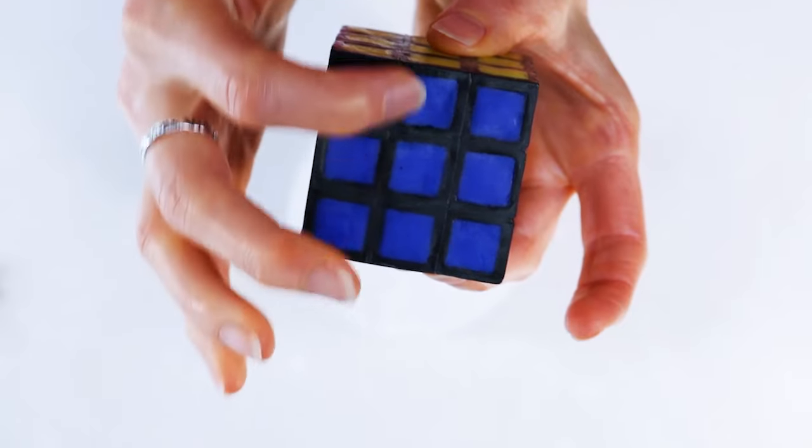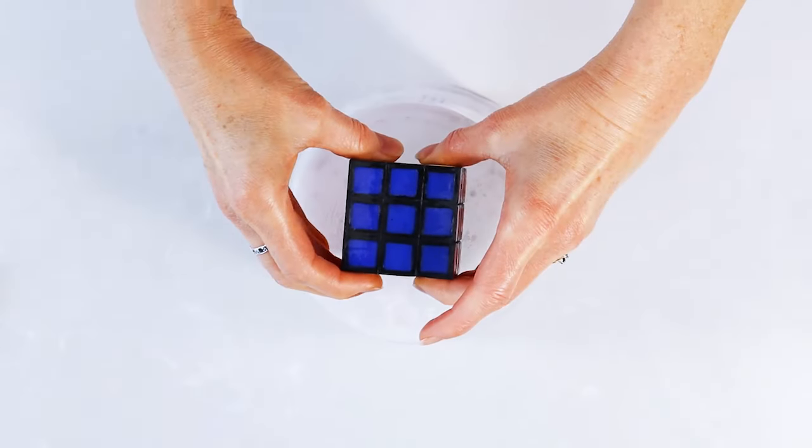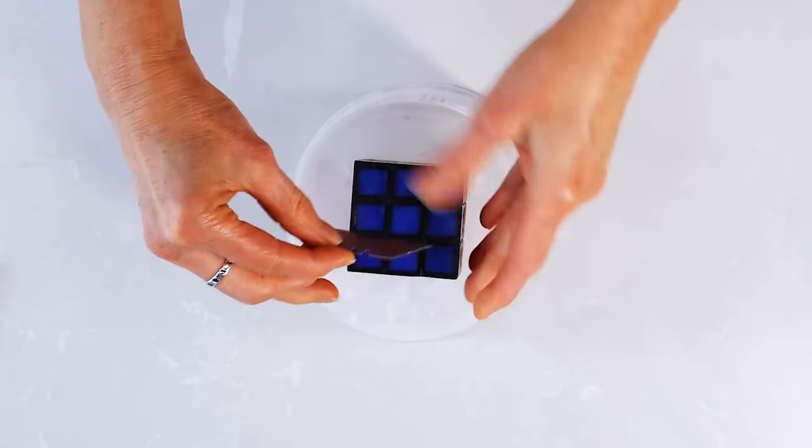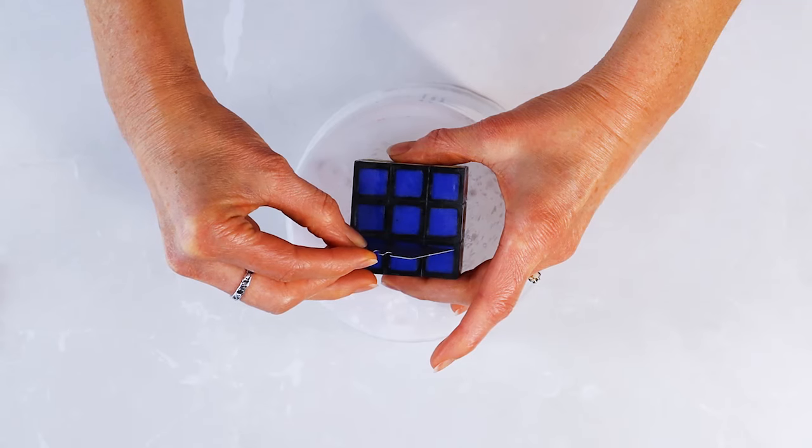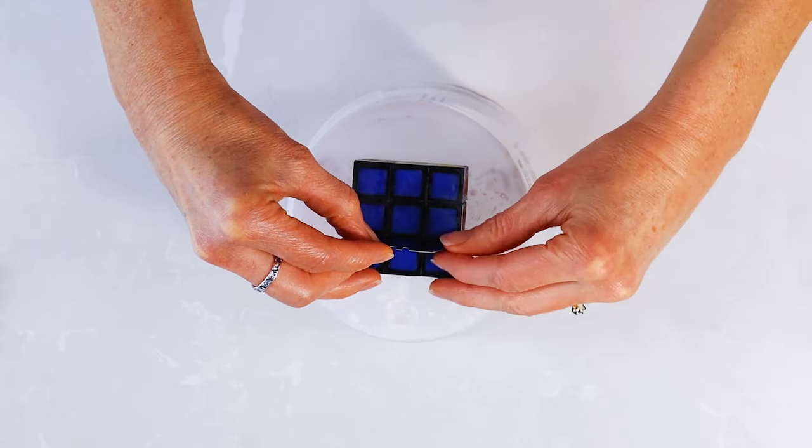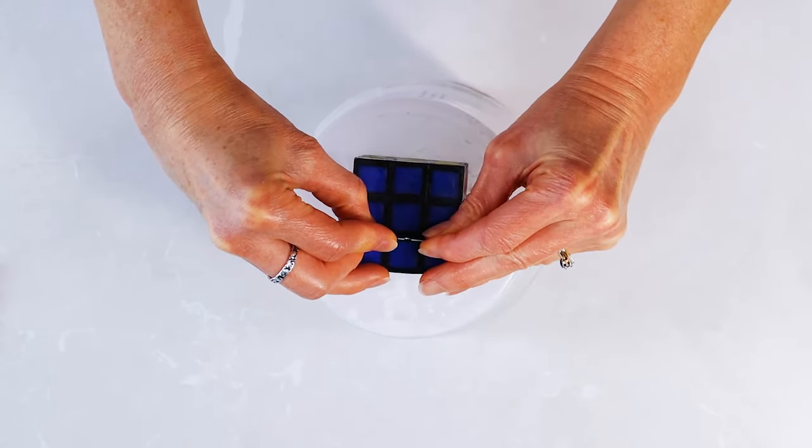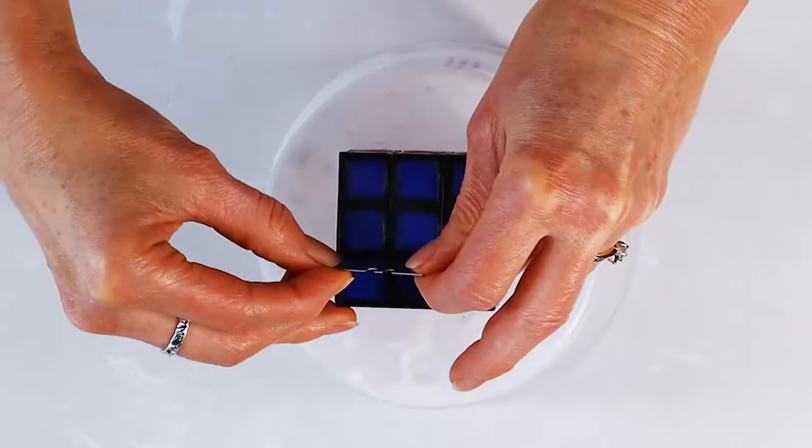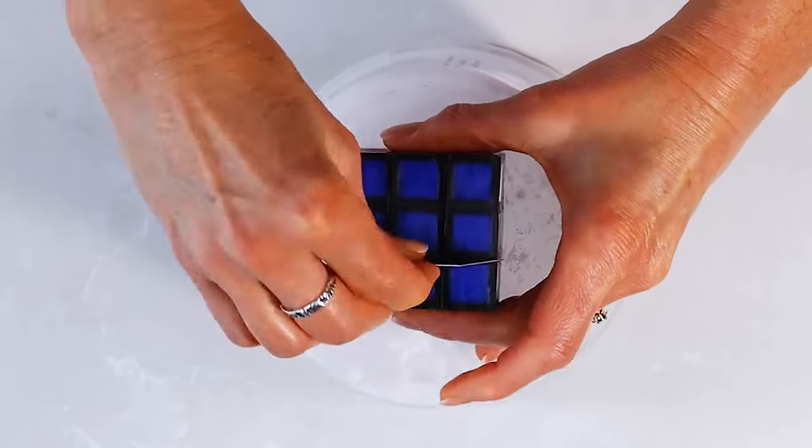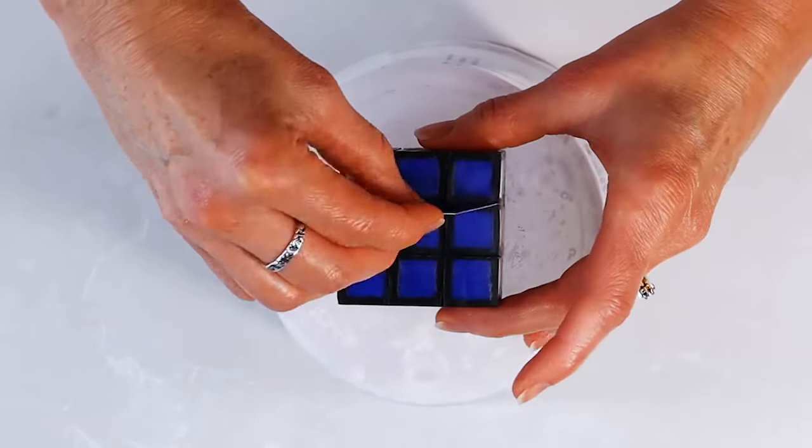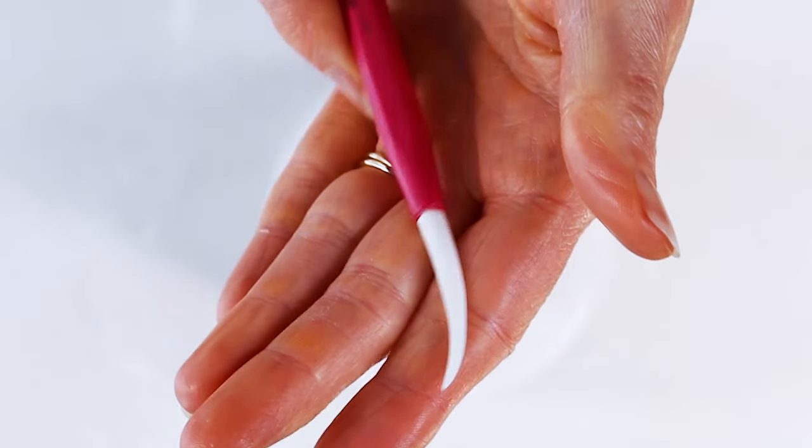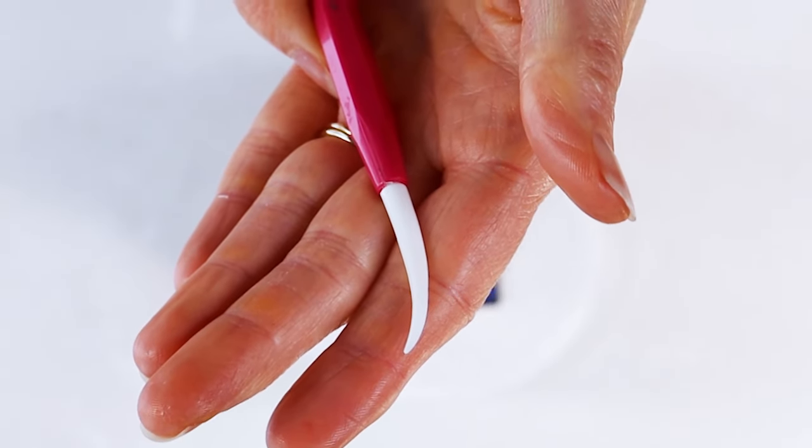Already much better. Now that all the edges are smooth, I need to dig out all of the grooves again. So my plan for that is to use a razor blade to mark them. And then I'm going to use my fondant tool to dig them out.